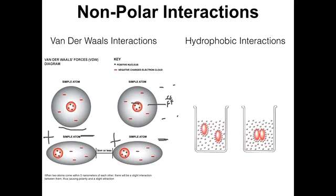Van der Waals interactions are stronger the more electrons you have — the more electrons, the more likely you are to have an imbalance. So the bigger a molecule, the more van der Waals interactions it can have. This is why propane or butane — only three or four carbons — is a gas. Octane, which is gasoline with eight carbons, is about two and a half times as large as propane. It's big enough that these van der Waals interactions can keep it together in liquid form, though if you spill gasoline it evaporates quickly because these forces aren't that strong.